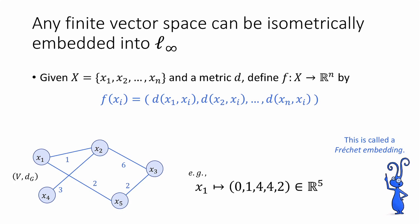Then we're going to define an embedding f from X into ℝⁿ as follows. f is going to map the point xᵢ to a vector of length n where the first coordinate is going to be the distance between x₁ and xᵢ, the second is the distance between x₂ and xᵢ, and so on, up to the last coordinate, which is the distance between xₙ and xᵢ.